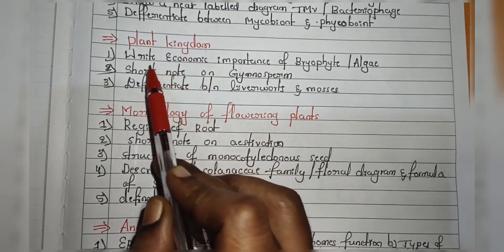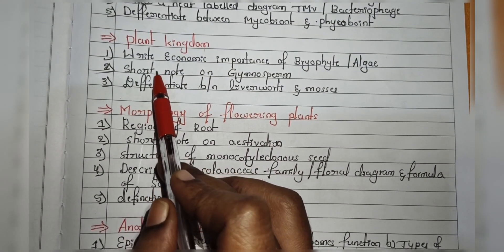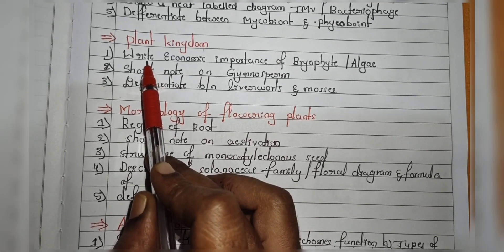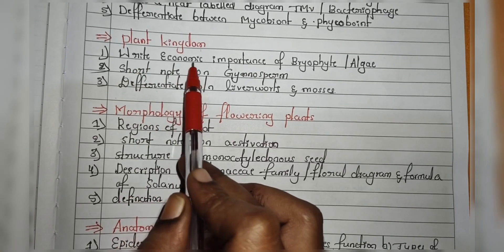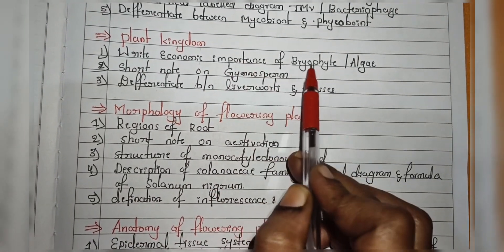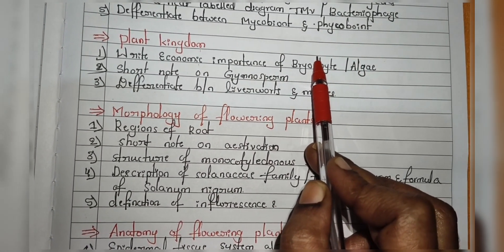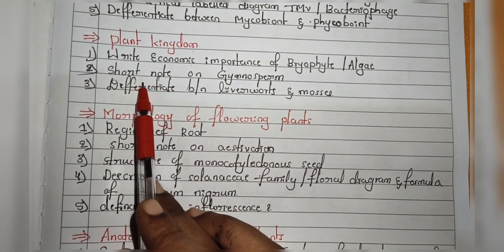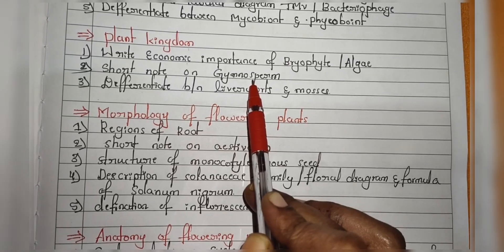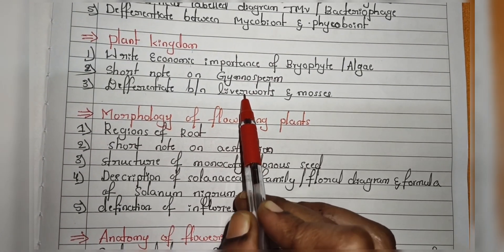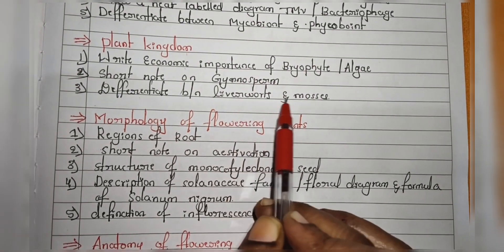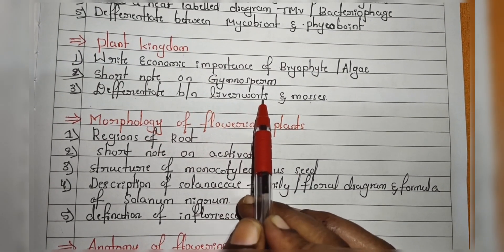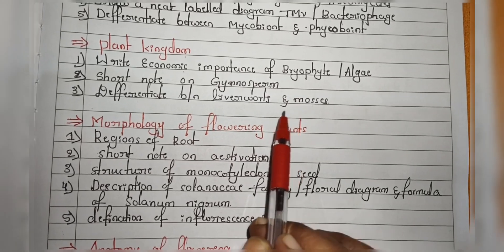Next chapter is Plant Kingdom. From the plant kingdom, questions will arise on only three topics. First and most important — they will ask regularly about the economic importance of bryophytes or algae. Next, they will ask a short note on gymnosperm. Third, the most important topic is liverworts and mosses — they may ask to differentiate between liverworts and mosses, or ask about them separately.